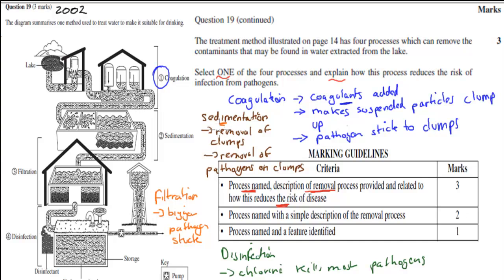At the sedimentation stage, this is where we actually remove those clumps. So at the coagulation stage, that's where they start to appear. At the sedimentation stage, we actually start to remove the clumps. So we basically have the removal of the clumps, and that helps, because when we remove the clumps, we also remove the pathogens that are stuck on the clumps. That's how the sedimentation stage would help.